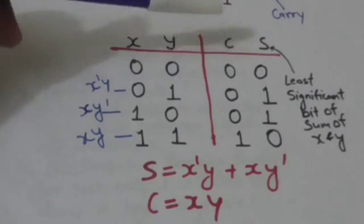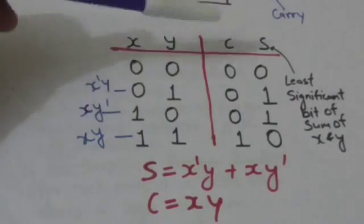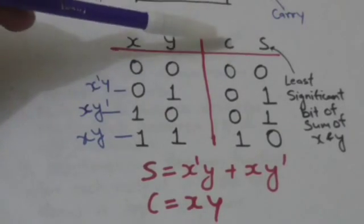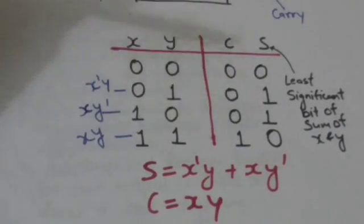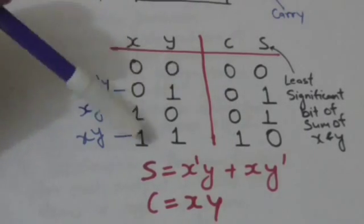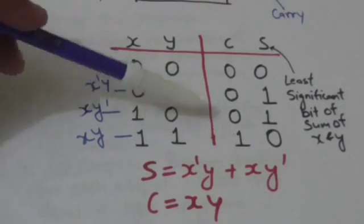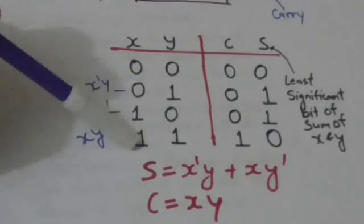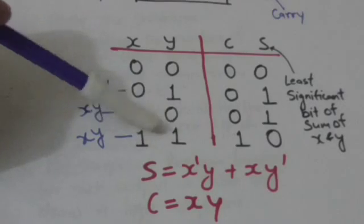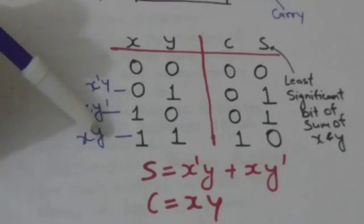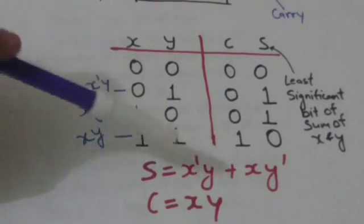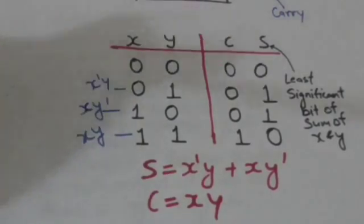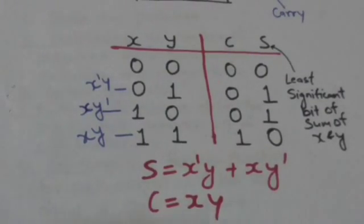Now, for what values of X and Y is C equal to one? When the values of both X and Y are one, the value of C is one. The minterm corresponding to these values is X AND Y, so C equals X AND Y.